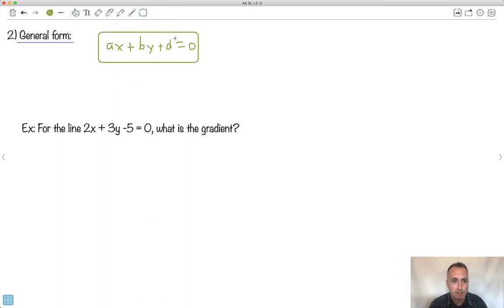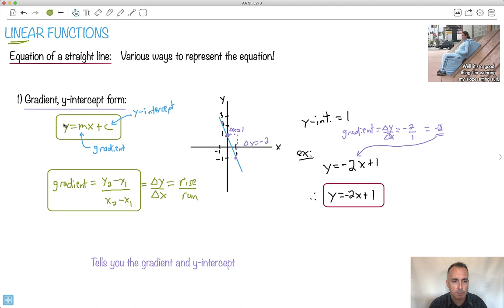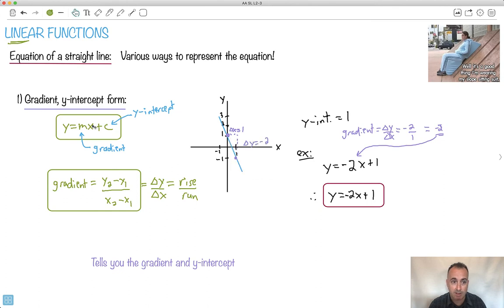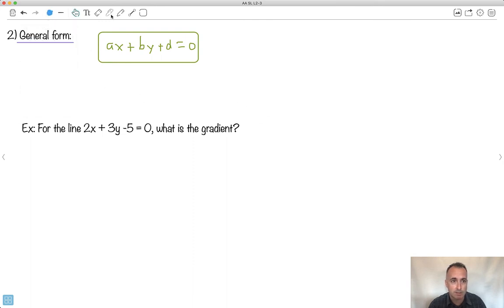It goes ax plus by plus d equals zero. That's another form, the general form. So you just have to find out what's a, what's b, what's d. In this case right here, what I would normally do is just take this form and imagine if I just moved the y over to the right. I would have like mx minus y plus c equals zero, and that is now in this general form. So just in case you're asked, let me just show you. We have something in general form: two x plus three y minus five equals zero. What's the gradient? This form isn't very helpful for that. This form would be helpful, the mx plus c form where I have y by itself. That's going to be my goal, to rewrite in y equals mx plus c form.